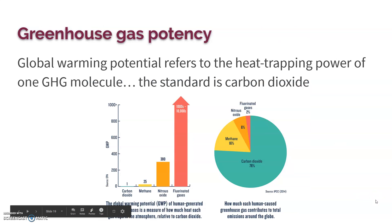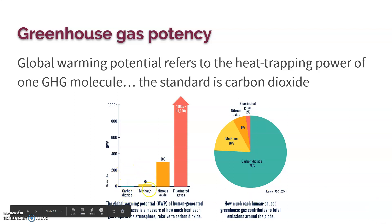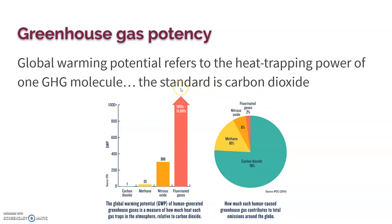Different greenhouse gases have different potencies — their ability to trap heat. We measure it relative to carbon dioxide. Methane is 25 times worse than carbon dioxide, meaning it would take 25 molecules of CO₂ to trap the same amount of heat as one methane molecule. Nitrous oxides are 300 times worse, and fluorinated gases are thousands to tens of thousands times worse.